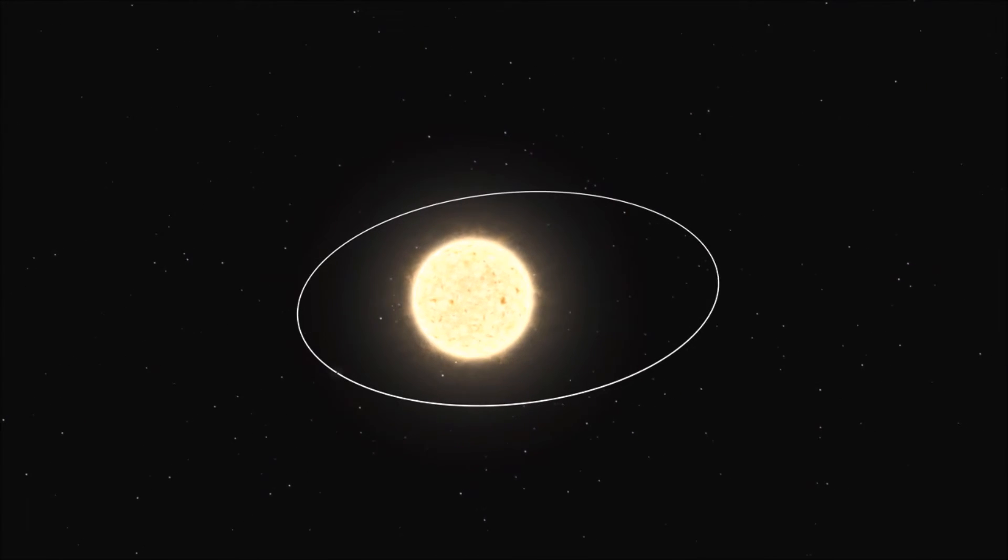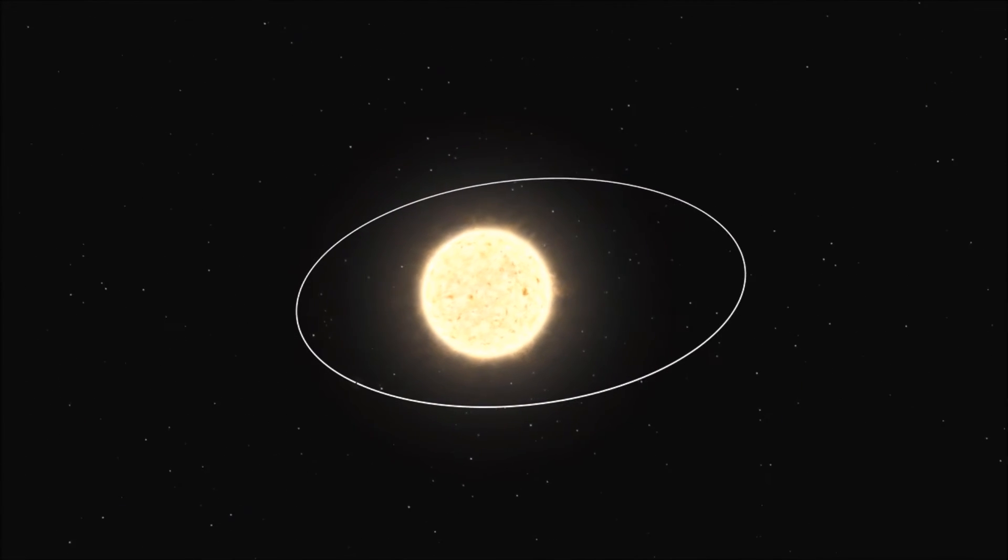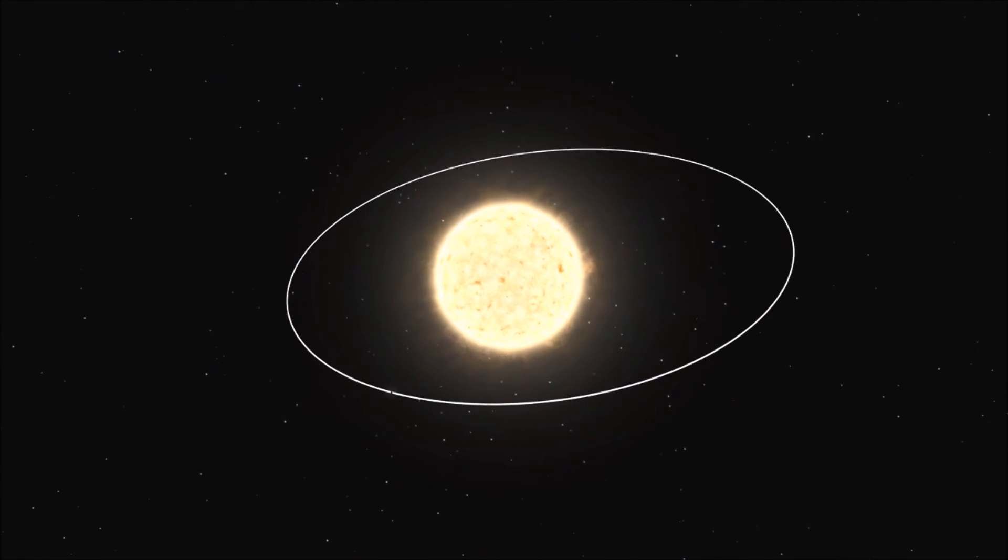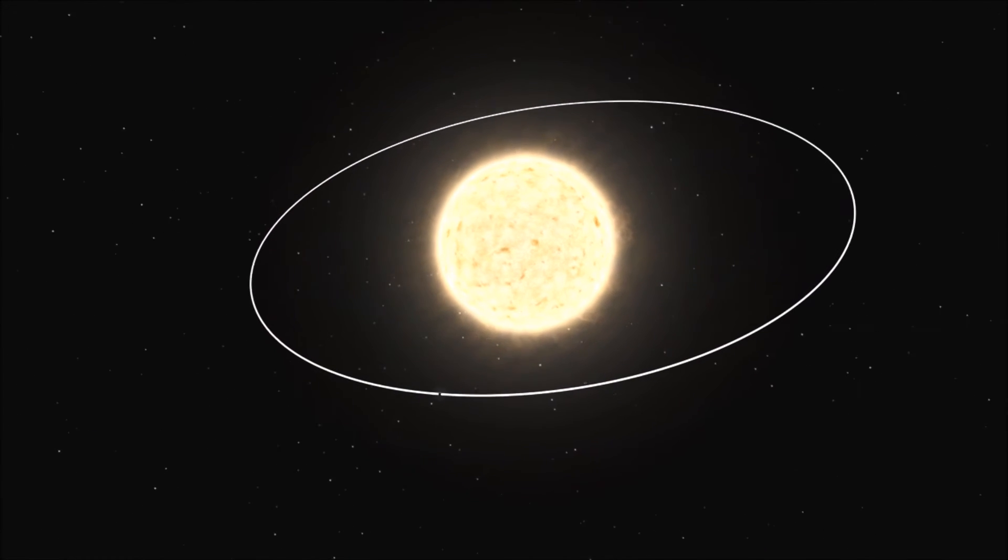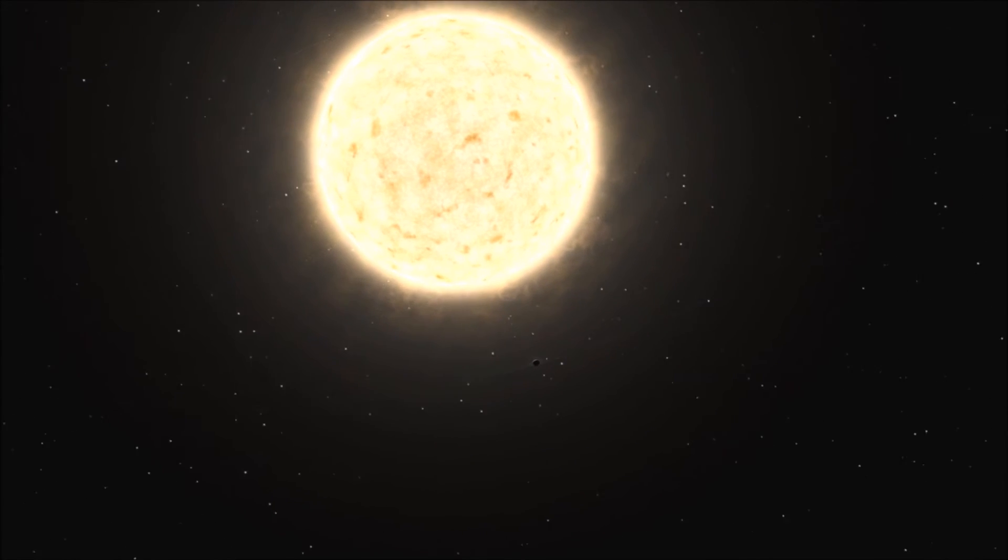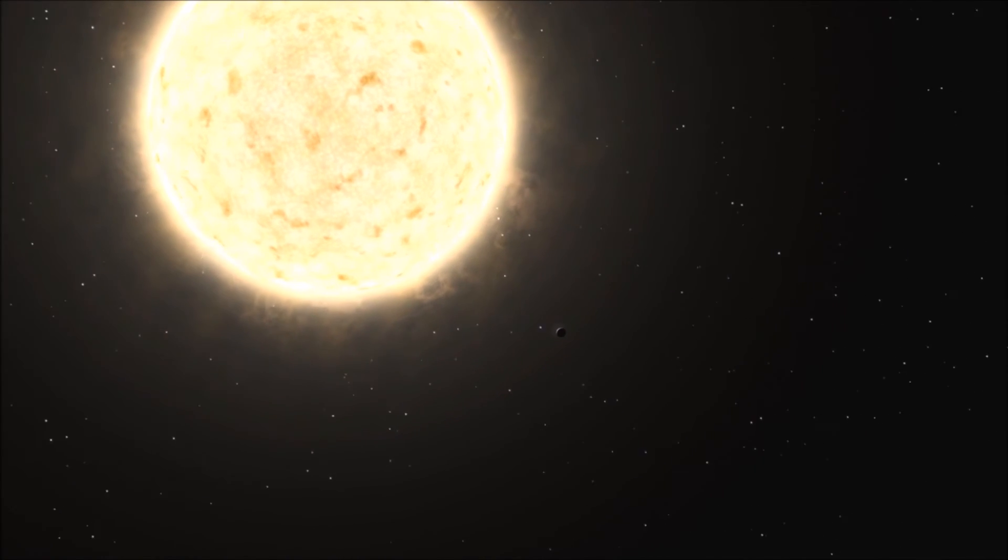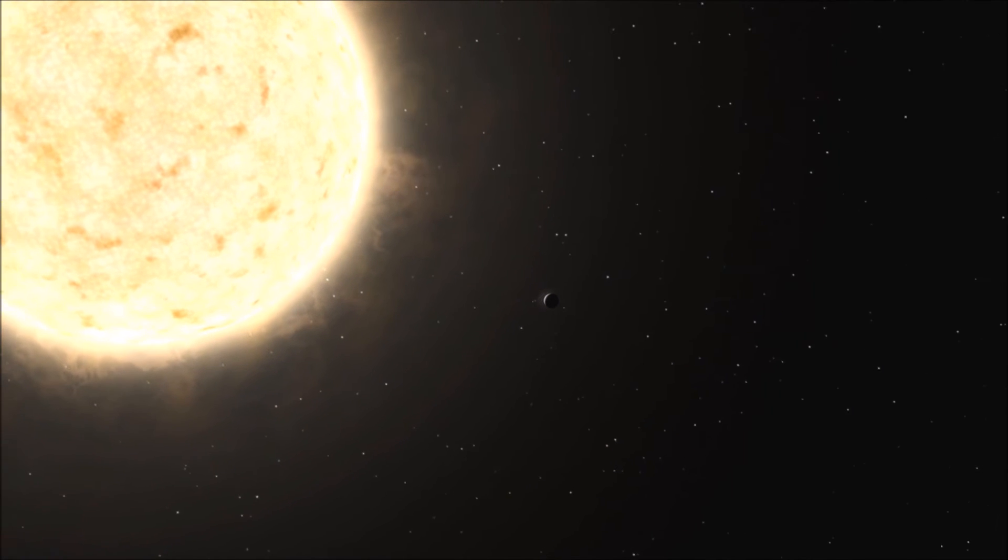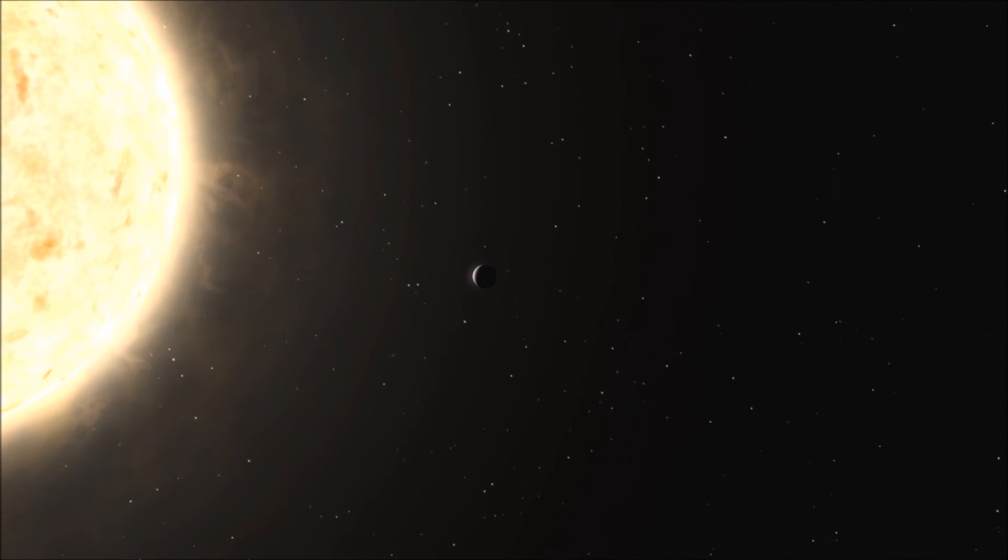HIP-13044 b is near to its host star. At the closest point in its elliptical orbit, it is less than one stellar diameter from the surface of the star or only about 0.055 times the Sun-Earth distance, and it completes an orbit in only about 16 days.